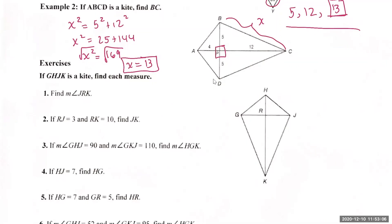What's the measure of angle JRK? The two diagonals are perpendicular to each other, so this must equal 90 degrees. Next, given RJ is 3 and RK is 10, find the measure of JK using the Pythagorean theorem. Since 109 can't be simplified further — 109 is prime — leave your answer as square root of 109.